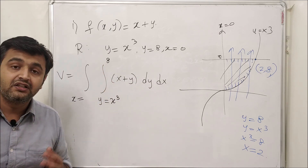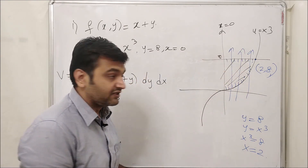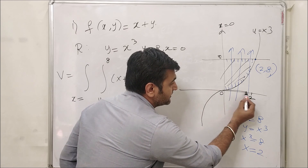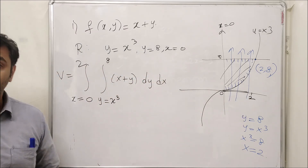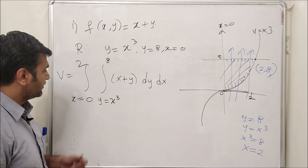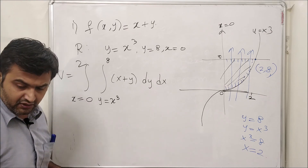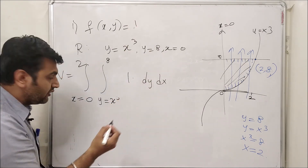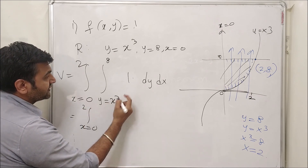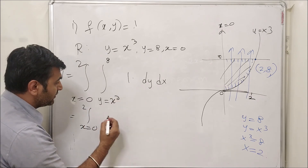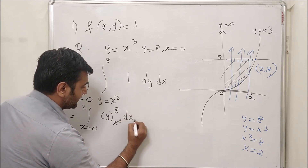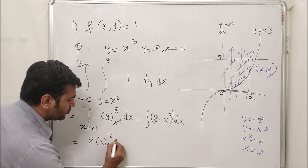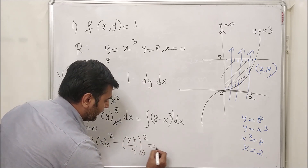To find the limits of x, project the region onto the x-axis. This projection gives the segment from 0 to 2, so x goes from 0 to 2. Now we're ready to integrate. For simplicity I'll use the constant function 1 instead of x + y, since my main goal is showing how to find limits. With f = 1, the integral becomes the integral from 0 to 2 of the integral from x³ to 8 of 1 dy dx.